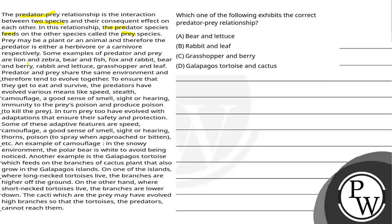Some examples of predator and prey relationships are: lion and zebra, bear and fish, fox and rabbit, bear and berry, rabbit and lettuce, and grasshopper and leaf.